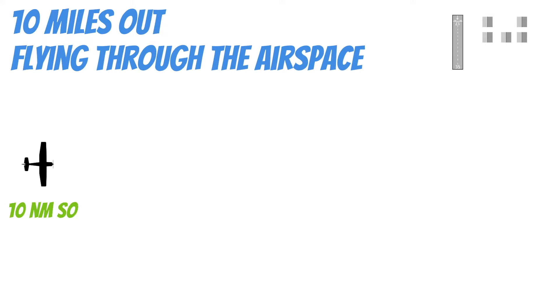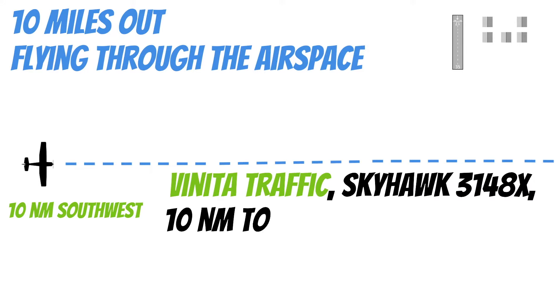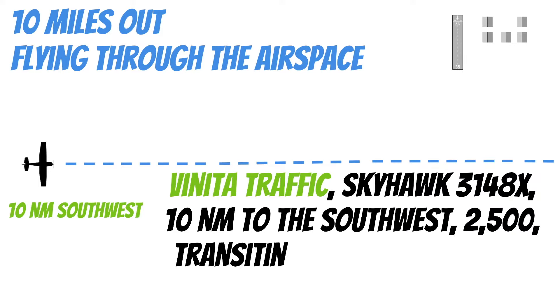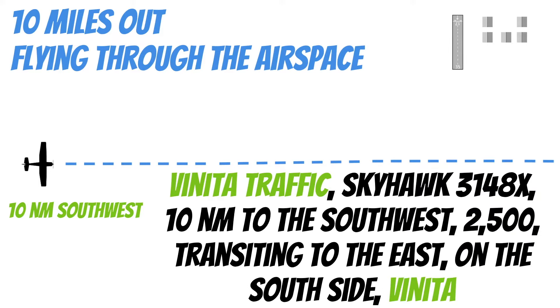Let's say I'm 10 miles out and not going to land, but flying through the airspace. I should probably make a radio call for this as well. You don't always have to do this — it depends on how low you are and how close you're getting to the airfield. Use good judgment. Here's an example: 'Veneta traffic, Skyhawk 3148 X-ray, 10 nautical miles to the southwest, 2,500, transiting to the east on the south side, Veneta.'